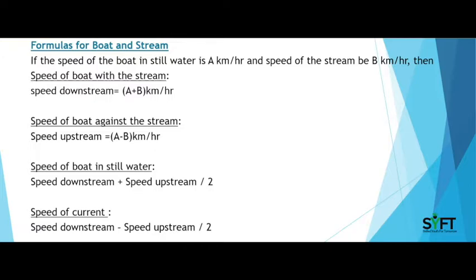Let's go to the formulas for Boat and Stream. If the speed of the boat in still water is 'a' kilometer per hour and the speed of the stream is 'b' kilometer per hour, then the formula for speed downstream is: speed downstream = a + b kilometer per hour. And the speed upstream = a minus b kilometer per hour.